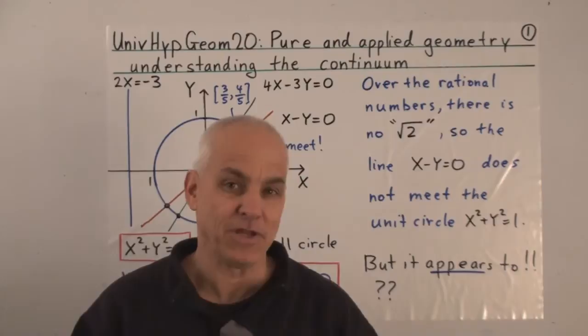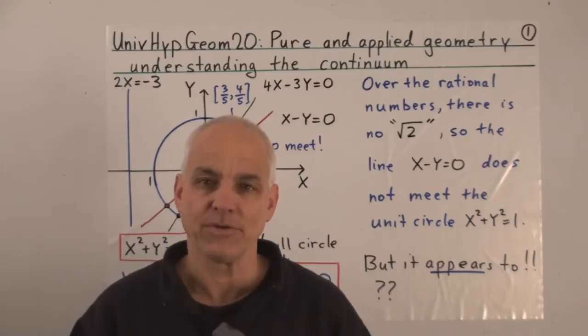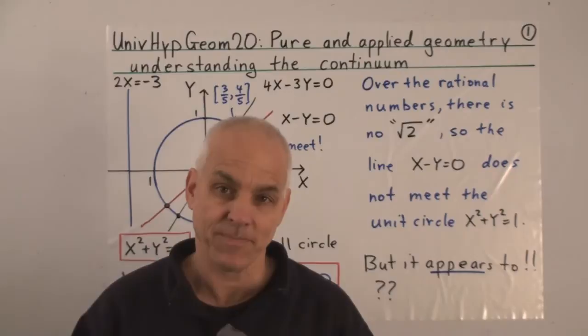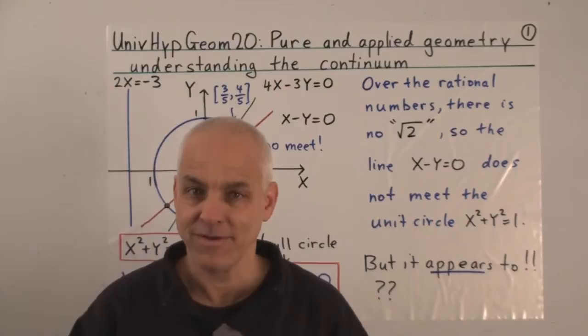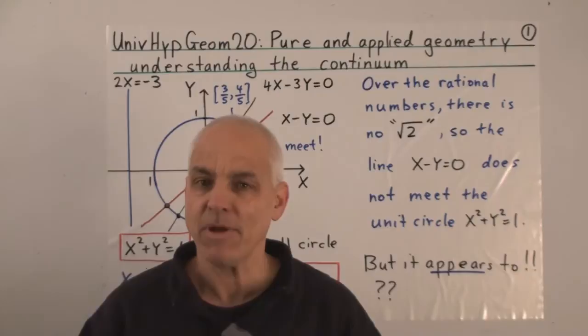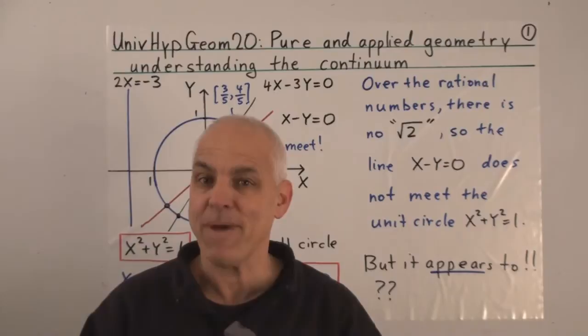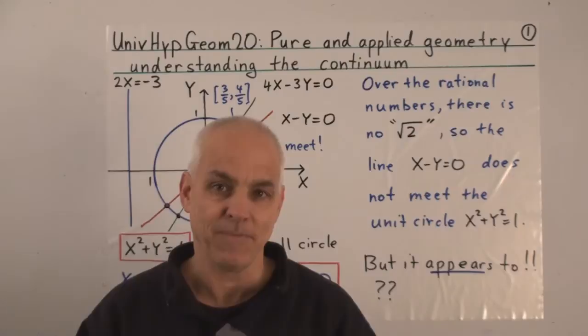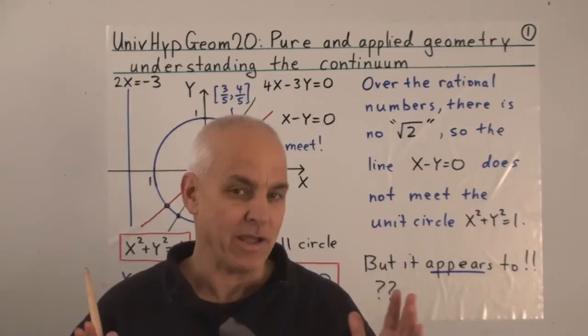Hi, I'm Norman Wildberger. This is one of a series of videos on Universal Hyperbolic Geometry. Today I'm going to talk about an issue of interest to a wider audience: the role of rational numbers, decimal numbers, and real numbers in geometry. I'll make a distinction between pure geometry and applied geometry, and talk about a new way of thinking about decimal numbers. I'm not much of a believer in so-called real numbers — I think that's a fantasy that weakens modern mathematics considerably. More detail will be found in my Math Foundations series.